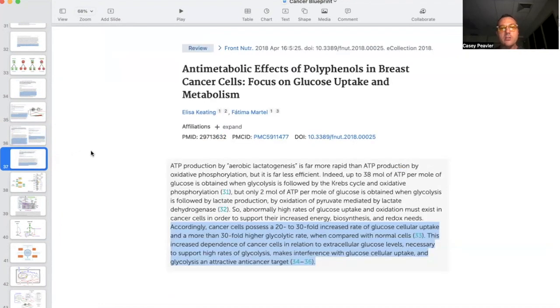The next thing I want to show you is that cancer cells possess a 20 to 30 time increased rate of glucose cellular uptake and a more than 30 time higher glycolytic rate compared to normal cells. This increased dependence of cancer cells in relation to extracellular glucose levels necessary to support the high rates of glycolysis makes interference with glucose cellular uptake and glycolysis an attractive cancer target. I would say that's probably the understatement of the century. It is the cancer target that should be the most important cancer target and has been completely ignored.